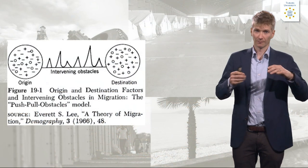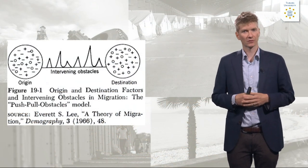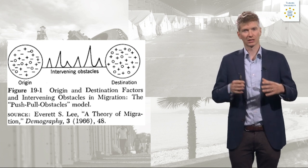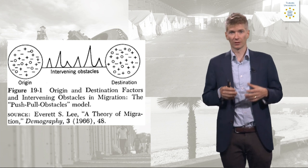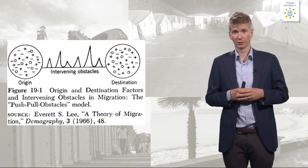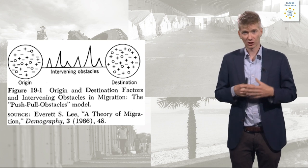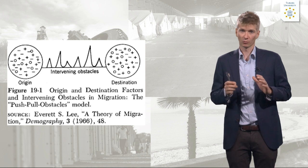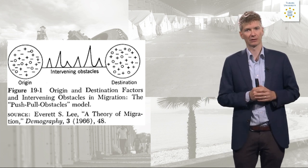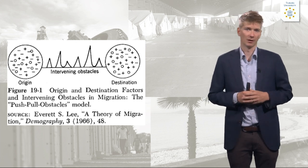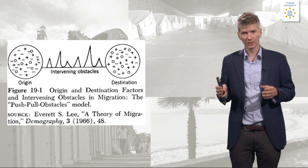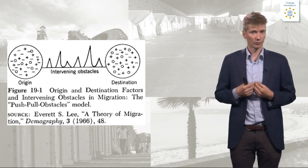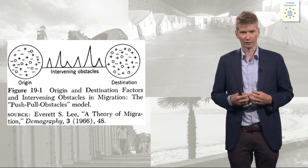Thinking this through, push-pull models are rather simplistic, because migration is never just the result of a push factor and a pull factor. There are also things that come in between. Sociologist Everett Lee from the University of Pennsylvania adapted the push-pull model with two extra factors. He acknowledged push and pull factors, but added that in between you have intervening obstacles and personal characteristics that explain why not everybody moves from point A to B.